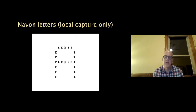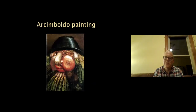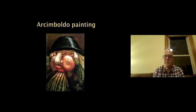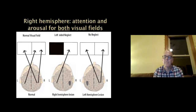We can also show these patients Navon letters — a patient with Balint syndrome shown a large letter A made of E's will say 'I see an E' but can't put the whole thing together. Or paintings made out of vegetables — they see an onion or a carrot but can't take the whole face in. These are all features of simultagnosia.